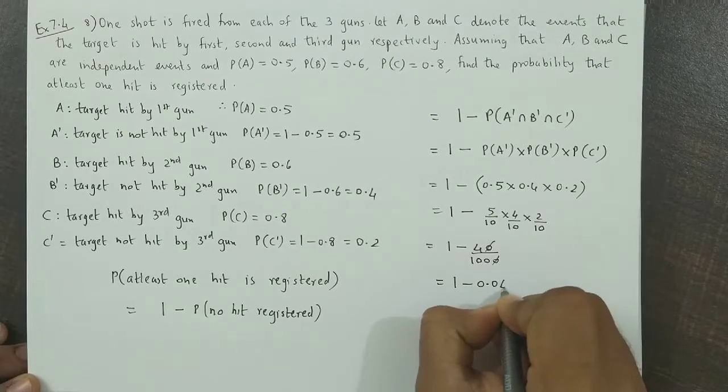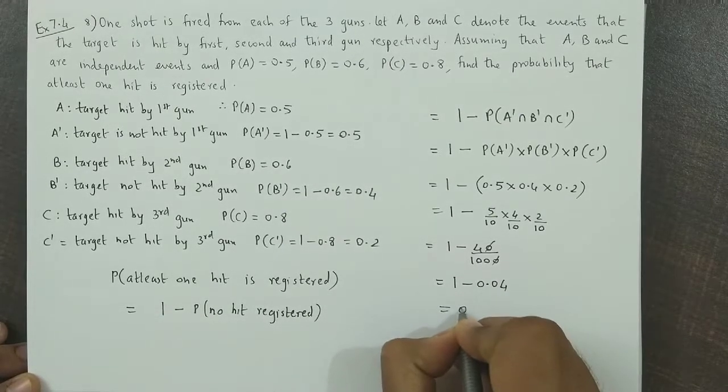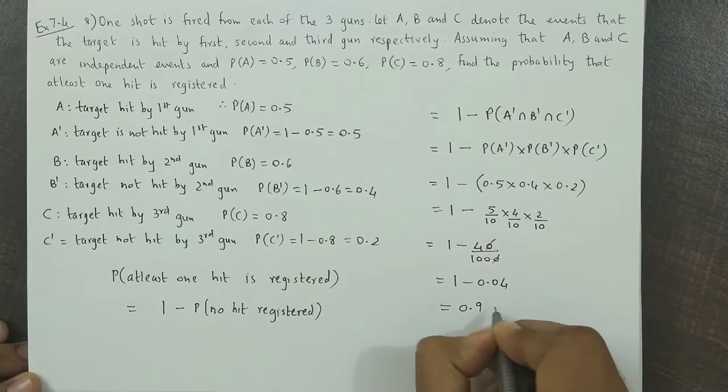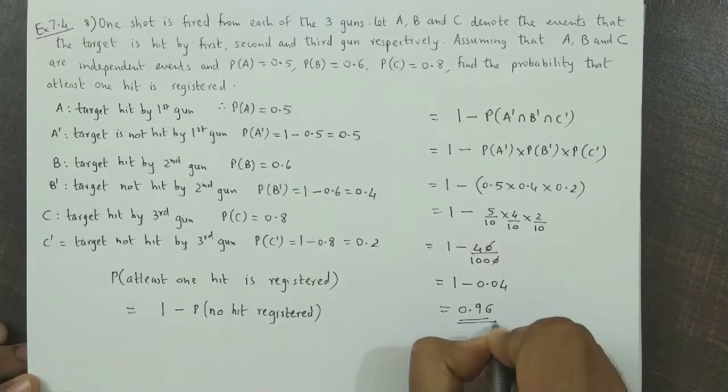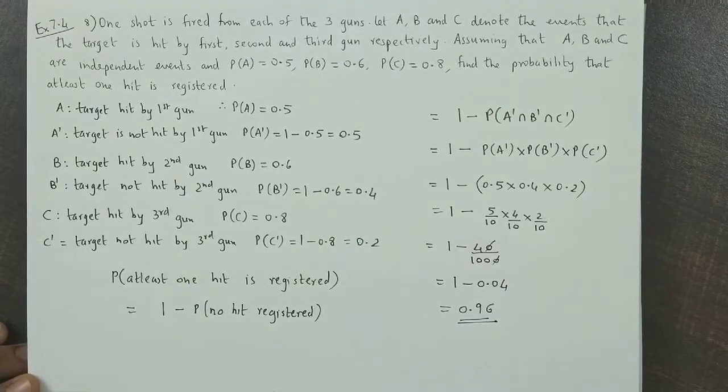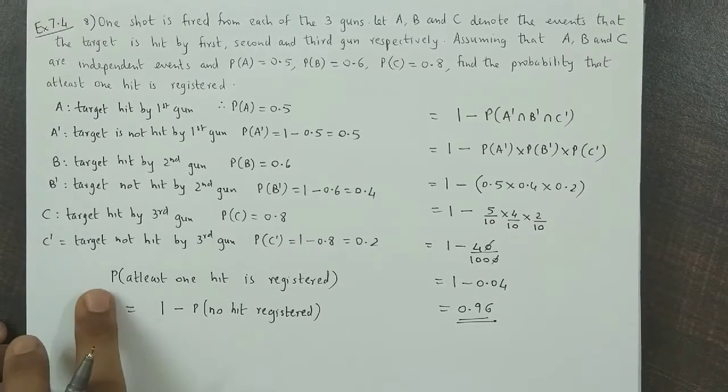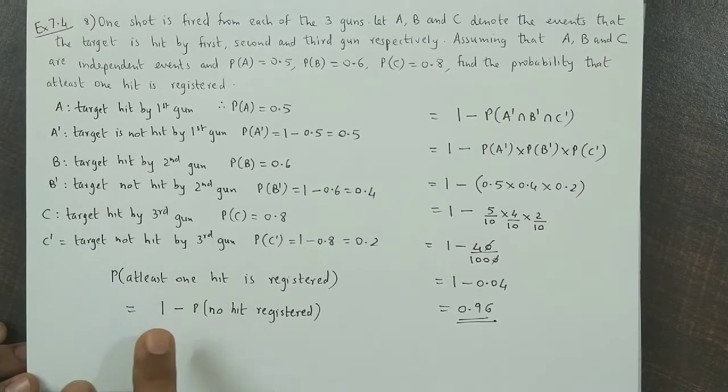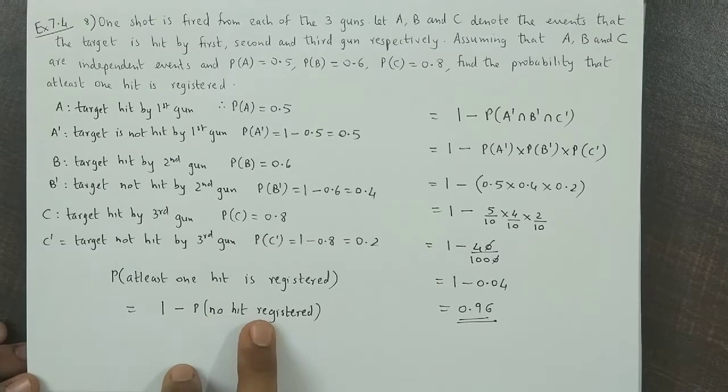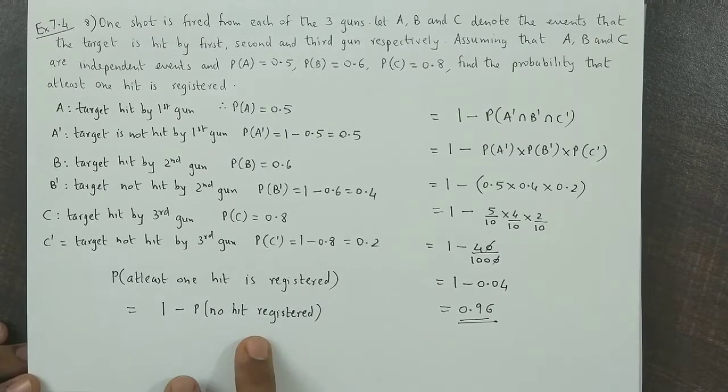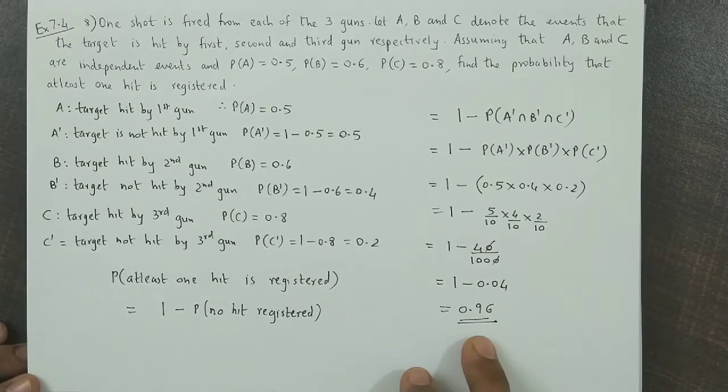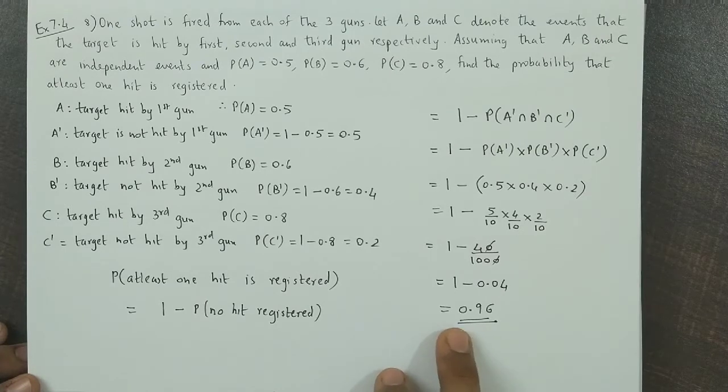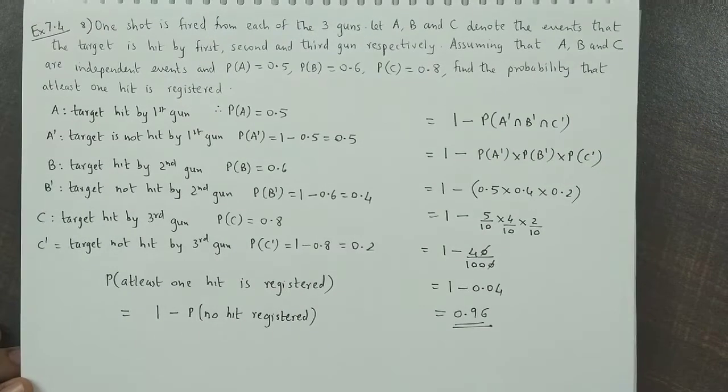If we calculate this value, the final value is 0.96. So this is the required probability. Remember, probability of at least one is 1 minus probability of none. Using this concept, we can obtain the probability value as 0.96.